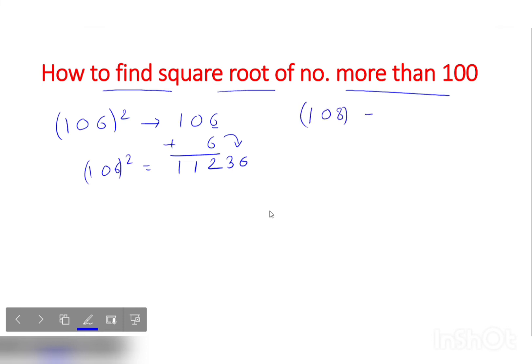We see 108. 108 plus unit digit is 8. And what will it be? 116. And the square of 8 is 64.